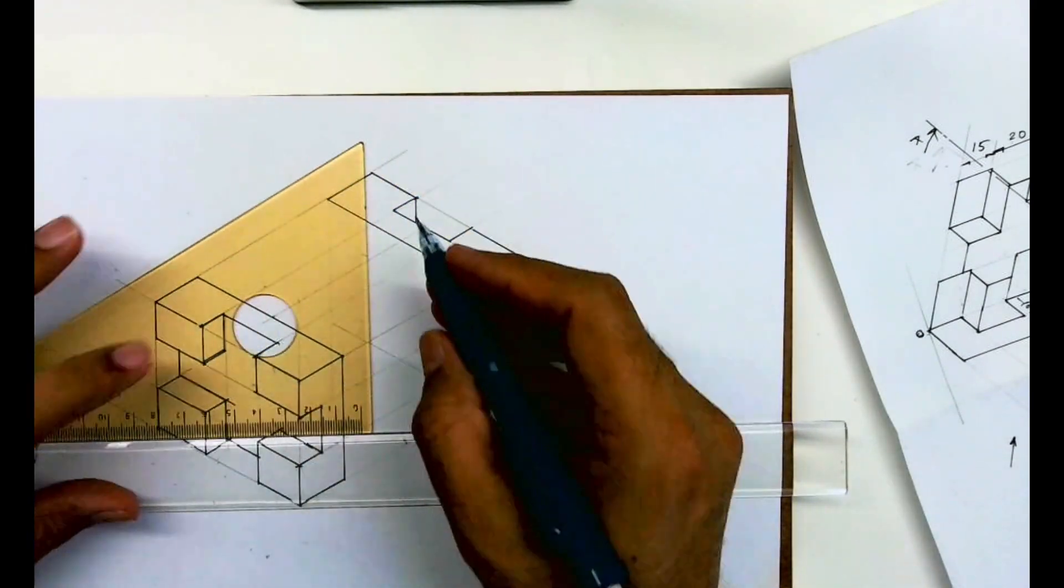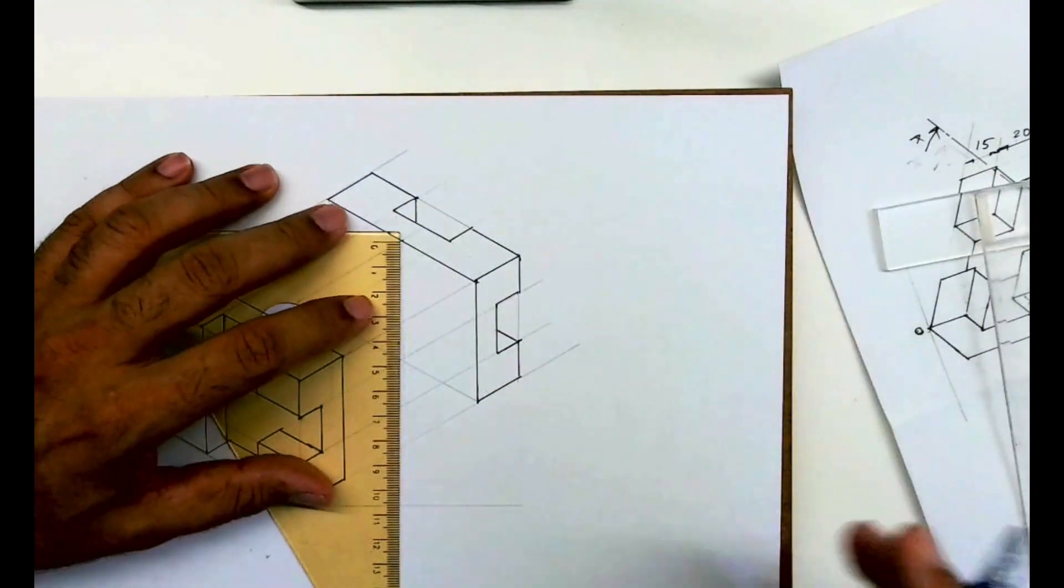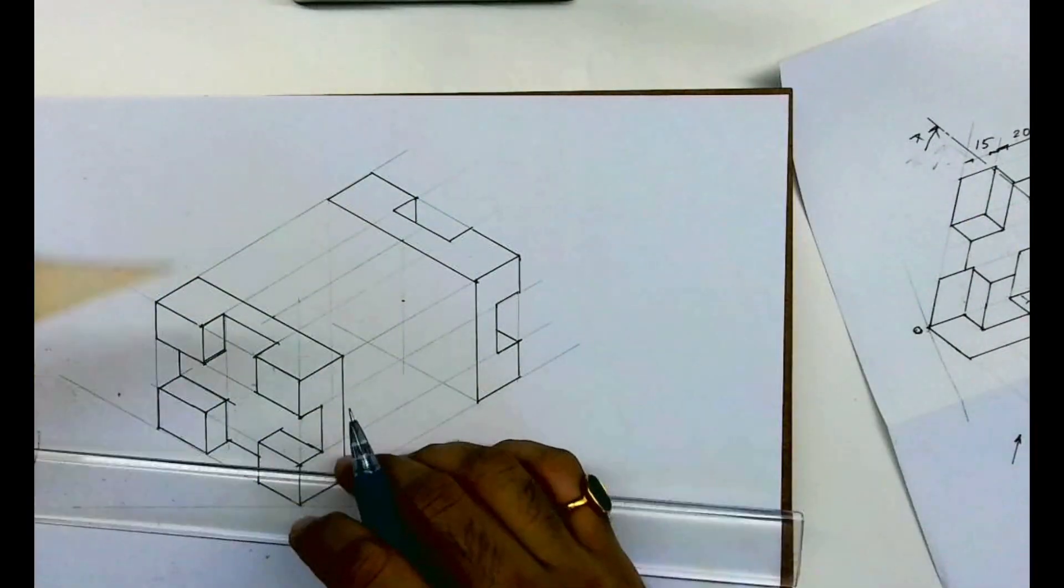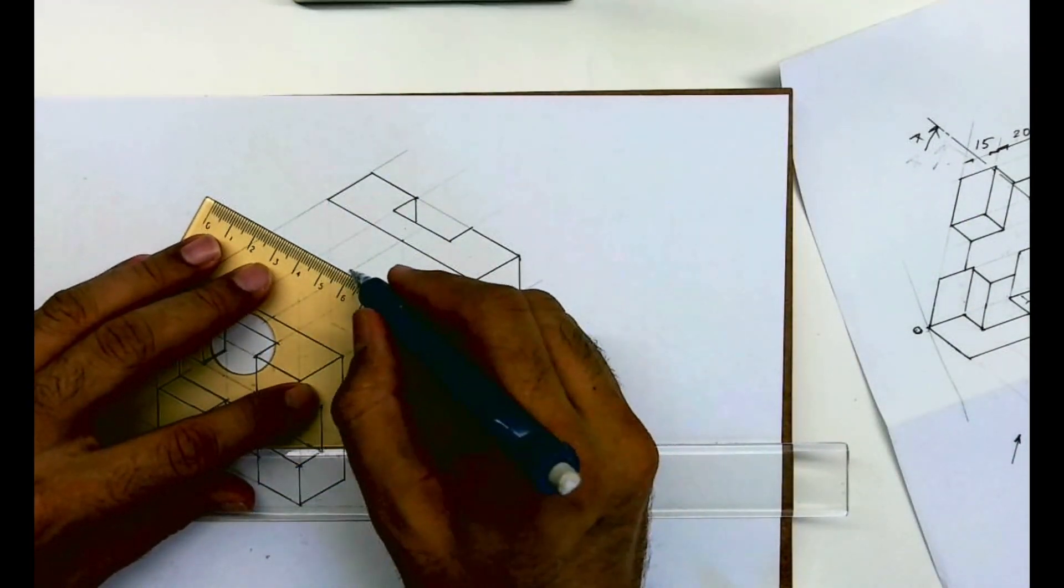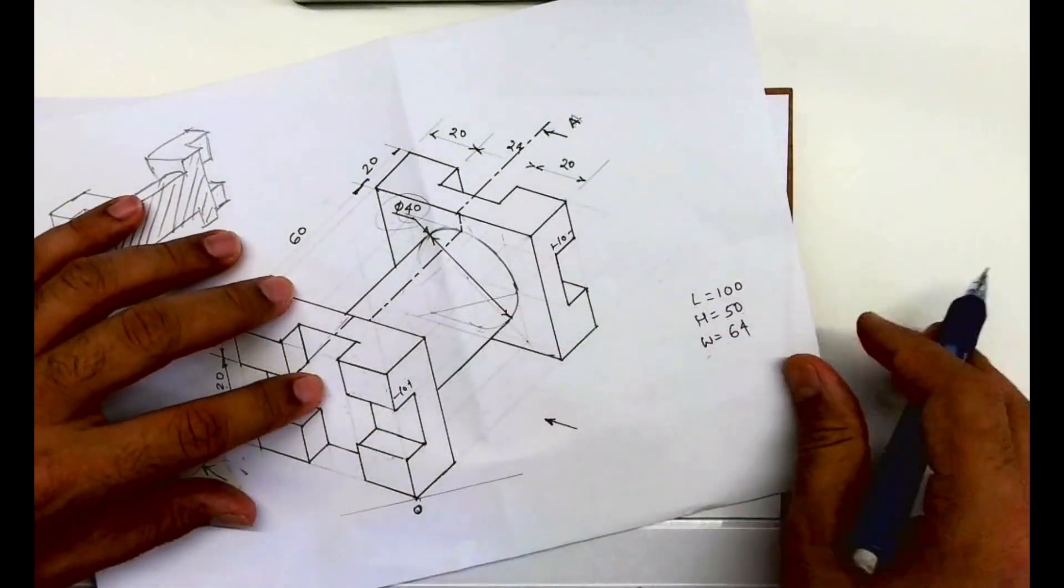Then I will go down by 25 because total height is 50, and from there I'll take 20, 20 on both sides. See this, so now we have center diameter is 40.